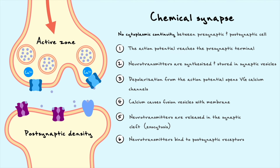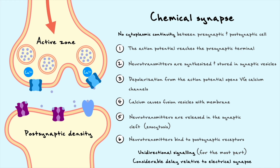This is just a brief introduction; we will get into the fine details later. You will notice that in this general model of the chemical synapse, transmission is unidirectional — though we will see later some examples where this blurs a bit. Additionally, due to all the steps involved in signal transmission, chemical synapses have a delay of about 1 millisecond, which is notable in comparison to electrical synapses.